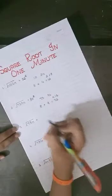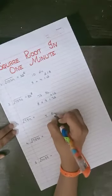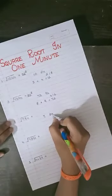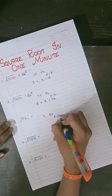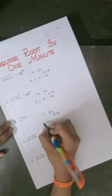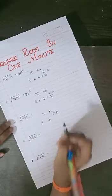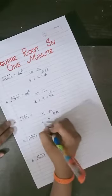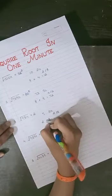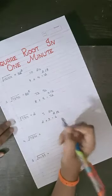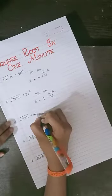Now we will solve the third question which is 784. We split it up, and the unit digit is 4, so the answer will end in either 2 or 8. For 7, it is between 2 square and 3 square — 2 square is 4 and 3 square is 9. Since 2 is smaller, we write 2 in the tens place. Multiplying 2 and 3 gives 6, and since 7 is greater than 6, we take 8. So the answer is 28.